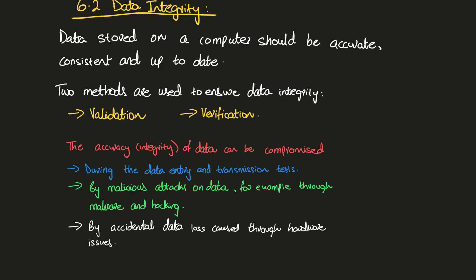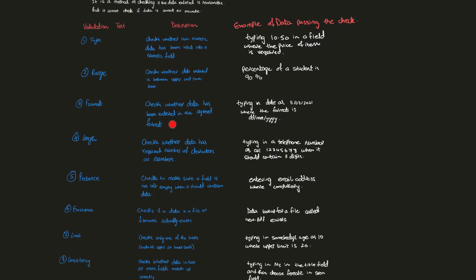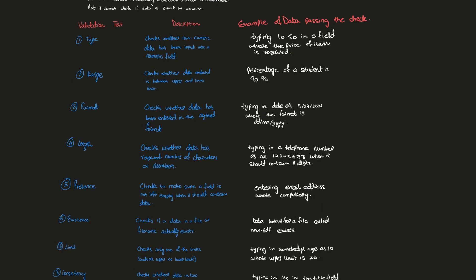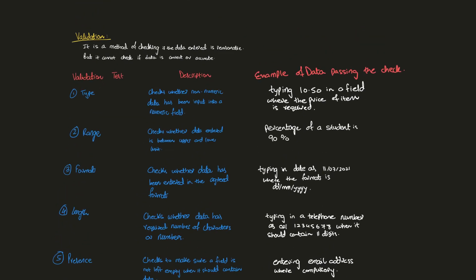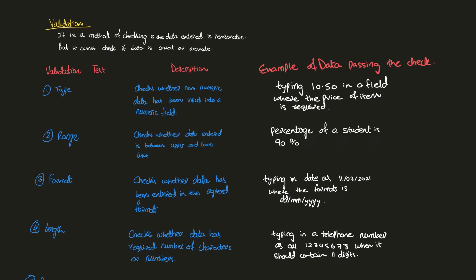The third cause is accidental data loss caused through hardware issues. For example, if your hard drive corrupts and you do not have a backup server, you are losing data and losing data's integrity. Now we move on to validation.